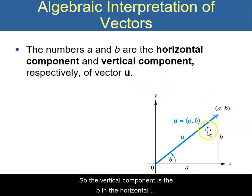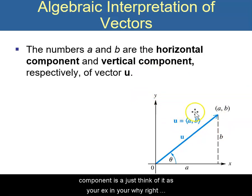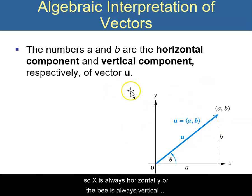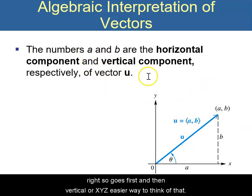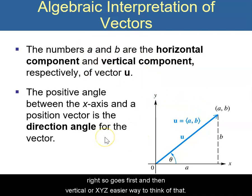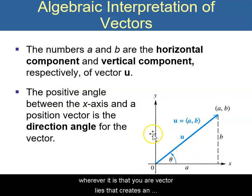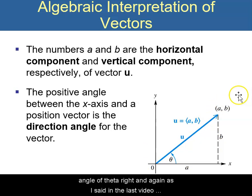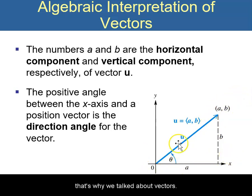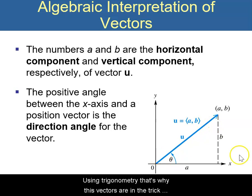The vertical component is b and the horizontal component is a — just think of it as your x and your y. X is always horizontal, y or b is always vertical. The positive angle between the x-axis and wherever your vector lies creates an angle of theta, and that's why we talk about vectors using trigonometry. That's why these vectors are in the trig class.